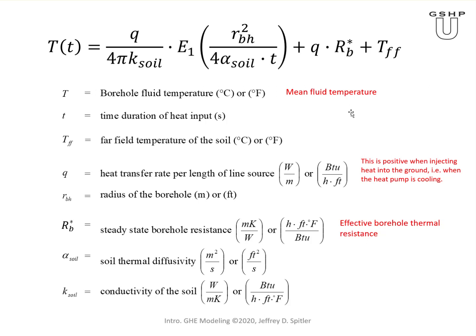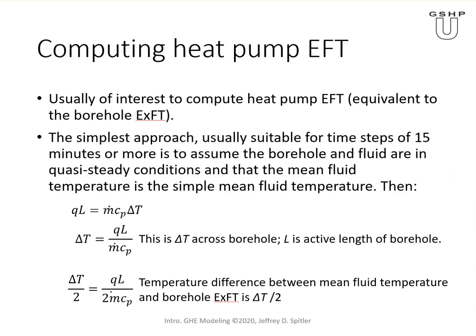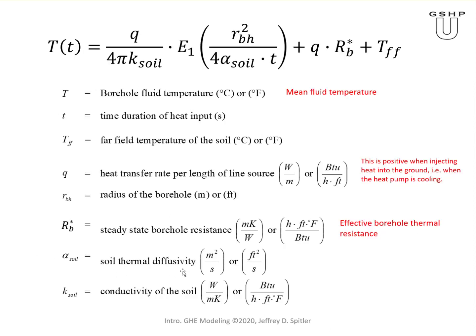T is the time duration of the heat input, so this expression is only valid for one fixed heat pulse — we'll get to how to use it when the heat input is changing. TFF is the far field temperature of the soil, also called the UGT, undisturbed ground temperature. Q is the heat transfer rate per unit length. RBH is the borehole radius, often abbreviated as little r sub B — distinct from capital R sub B, which is the borehole resistance. Finally, alpha and K are the soil thermal diffusivity and conductivity, respectively.